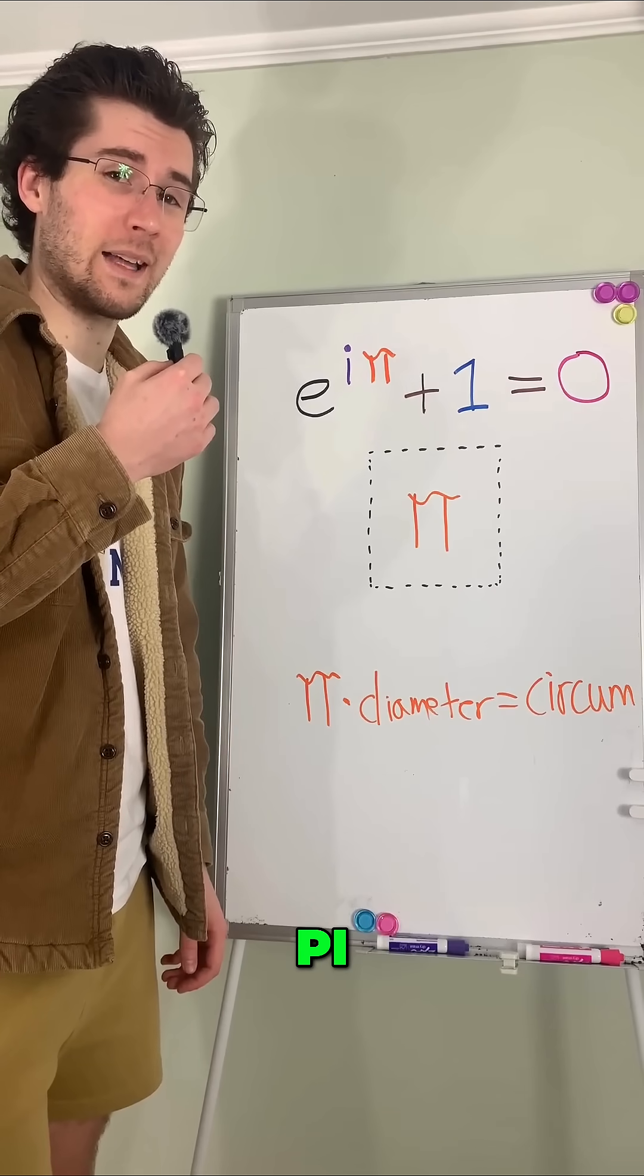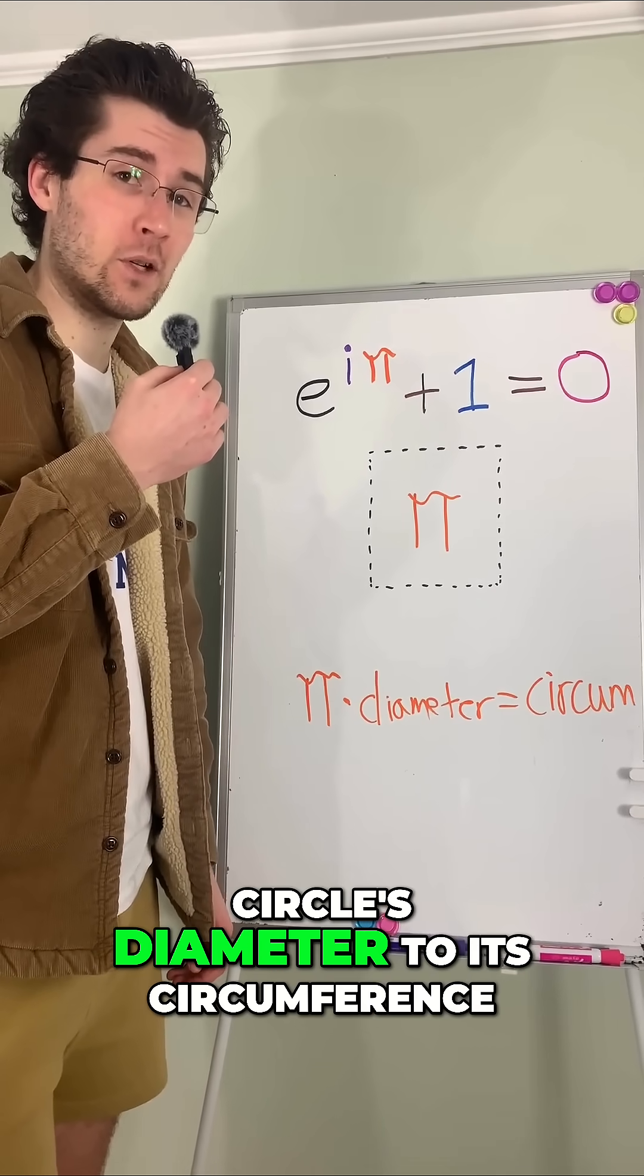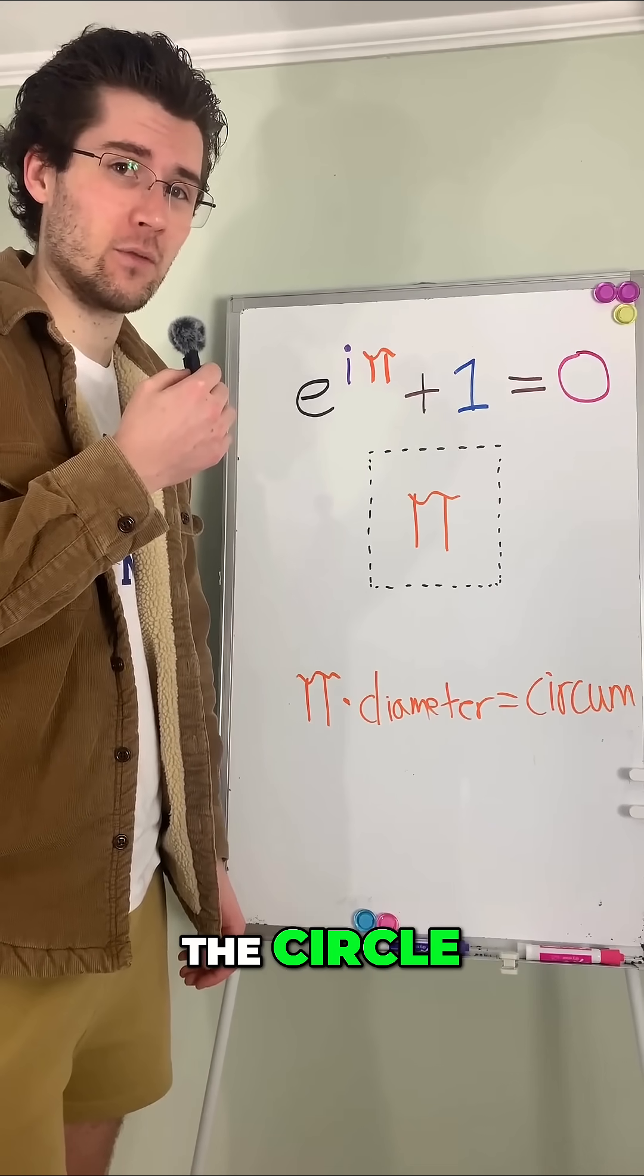And, of course, pi, the ratio of a circle's diameter to its circumference, no matter how big the circle.